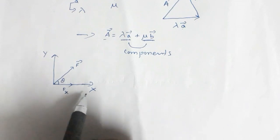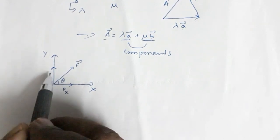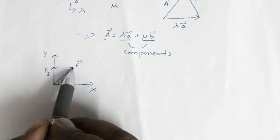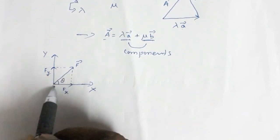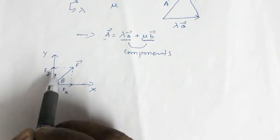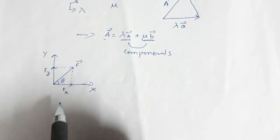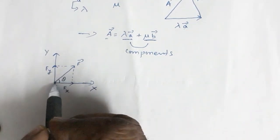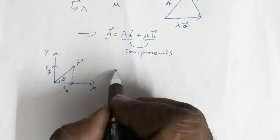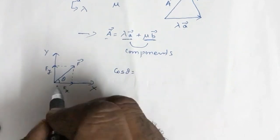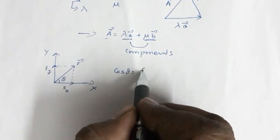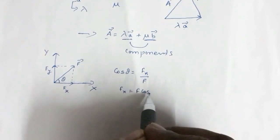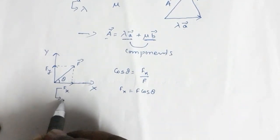The component along the x axis is fx. Now I can complete a rectangle such that fy and fx are the two adjacent sides. If I take this right angle triangle, cos theta is base over hypotenuse. The length of the base is fx, so it is fx over f. This gives fx equal to f cos theta — so this component is f cos theta.